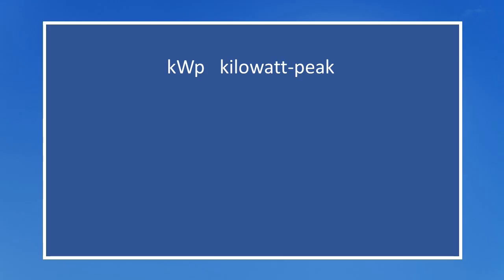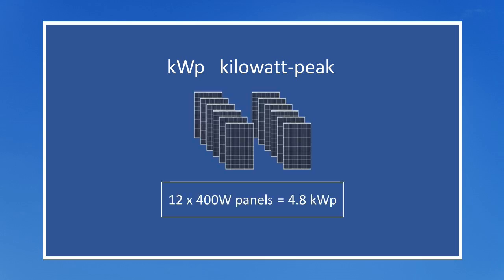One last bit of terminology which crept in earlier: kWp or Kilowatt Peak. Kilowatt Peak is used to specify the peak power of an individual solar panel, or when put together with others, a complete solar array. The rating in Kilowatt Peak is the rate at which the panel or array of panels generate energy at their peak performance. Solar panels are available in a range of sizes and ratings, but at the time of making this video, panels in the range of around 400 to 450 watts peak were typically being installed on residential properties.